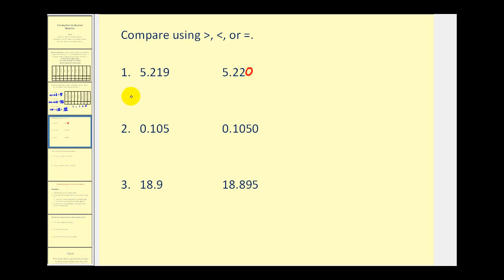Now if we wanted to, we could write this as 5 and 219 thousandths, and this would be 5 and 220 thousandths. When it's written in fraction form with a common denominator, it's pretty easy to tell that this number here is smaller than the second. Therefore, we would say that 5.219 is less than 5.22. So really what we're doing when we add extra zeros to the right is we're obtaining a common denominator in fraction form. And I think that's a nice way to do a comparison.